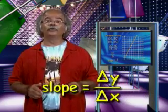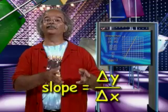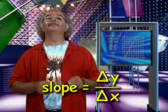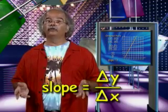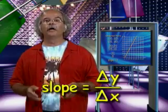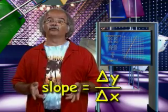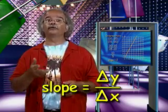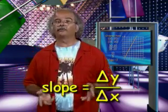Now, if that's Greek to you, you're right on top of it, because that is the Greek letter delta, which mathematicians use to indicate change. The slope is sometimes expressed as delta y over delta x.